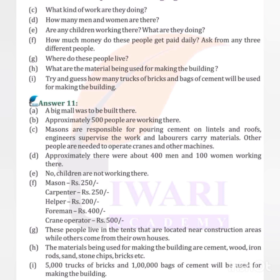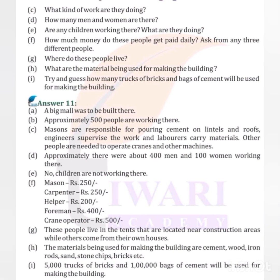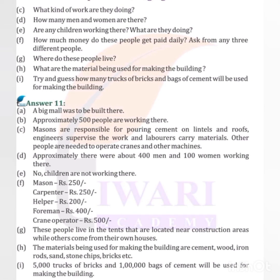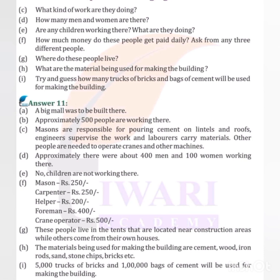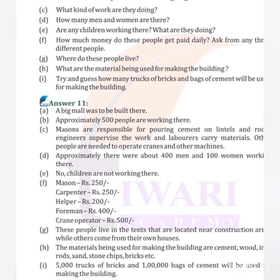Are any children working there? No, children are not working there. How much money do these people get paid daily? Mason: Rs. 250; carpenter: Rs. 250; helper: Rs. 200; foreman: Rs. 400; and crane operator: Rs. 500.